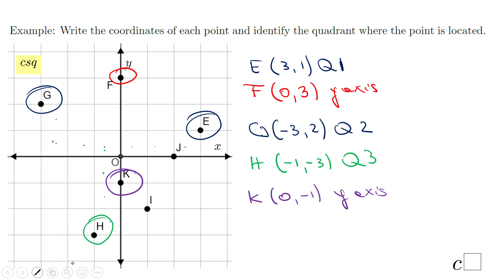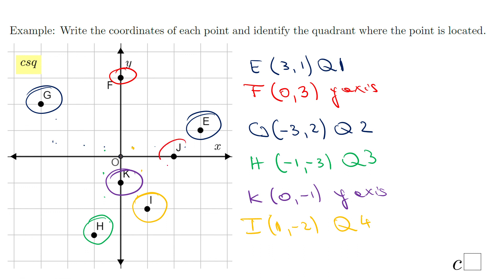Point I: for that one, you move one unit right and two down — so one and negative two. That will be in quadrant four. And the last point, point J, is on the x-axis. From the origin, I move two units right, so two and zero — that is on the x-axis.